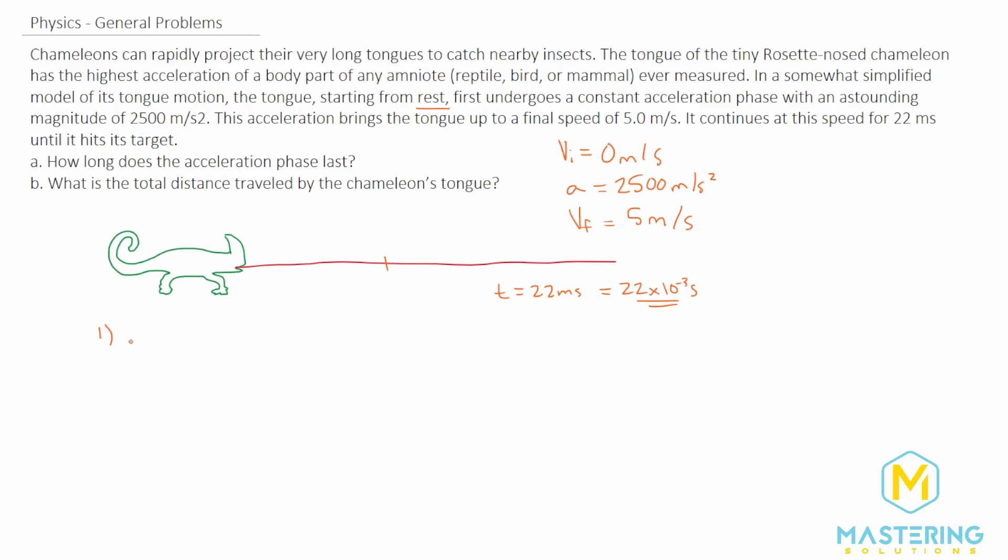To solve for the first section, we can use the kinematic equation: v final equals v initial plus acceleration times time. We're trying to solve for t and the initial velocity is zero. So let's divide both sides by acceleration.